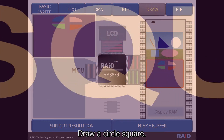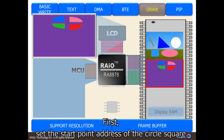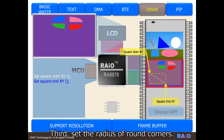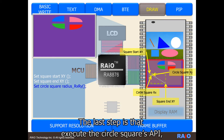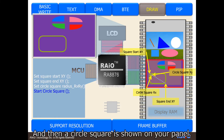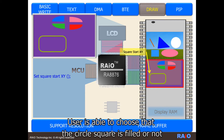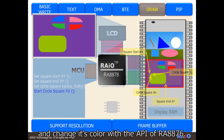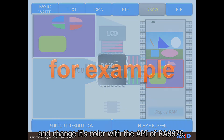Draw a circle square. First, set the start point address of the circle square. Second, set the end point address of the circle square. Third, set the radius of the round corners. The last step is to execute the circle square's API. RA8876 will start drawing a circle square operation, and then a circle square is shown on your panel. User is able to choose whether the circle square is filled or not and change its color with the API of RA8876.